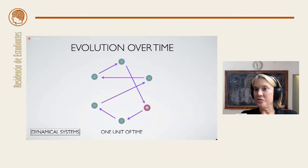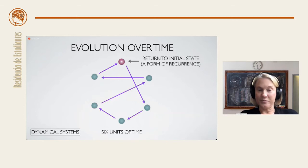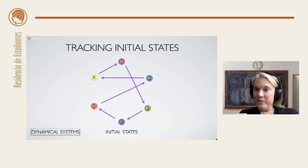Under one unit of time, it's going to move according to the purple arrow to a different state. And under two units of time, it moves again. Three. Four. Five. Six. After six iterates, or after six units of time, we return to the initial state. That is a form of recurrence.